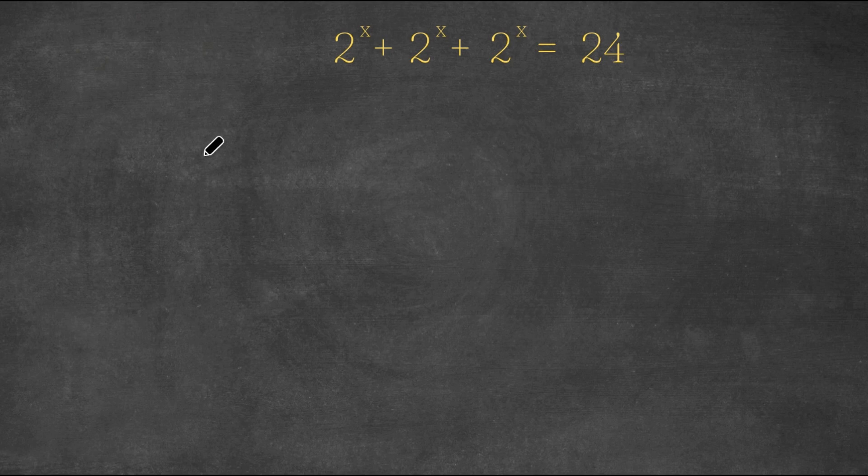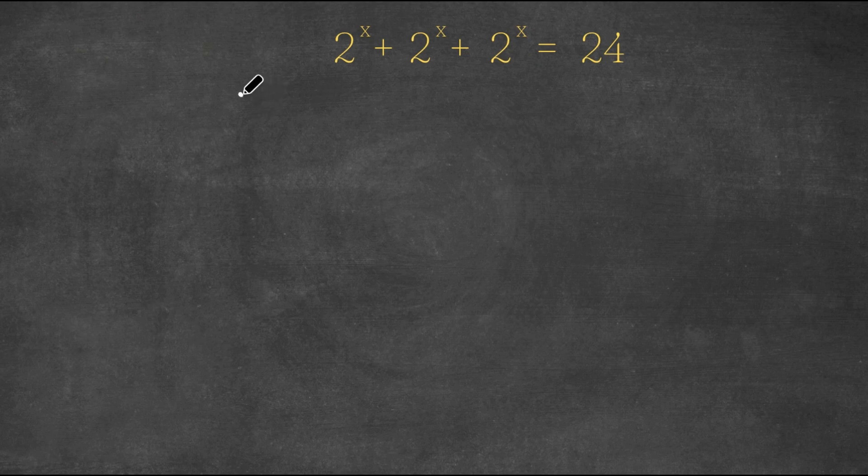Now what I'm first going to do is, because for our left-hand side here all of our terms are 2 to the power of x, I'm simply going to factor out 2 to the power of x from our left-hand side.